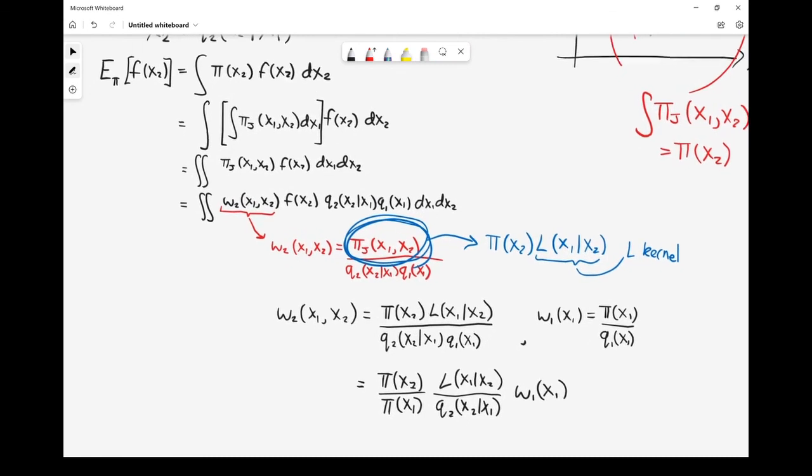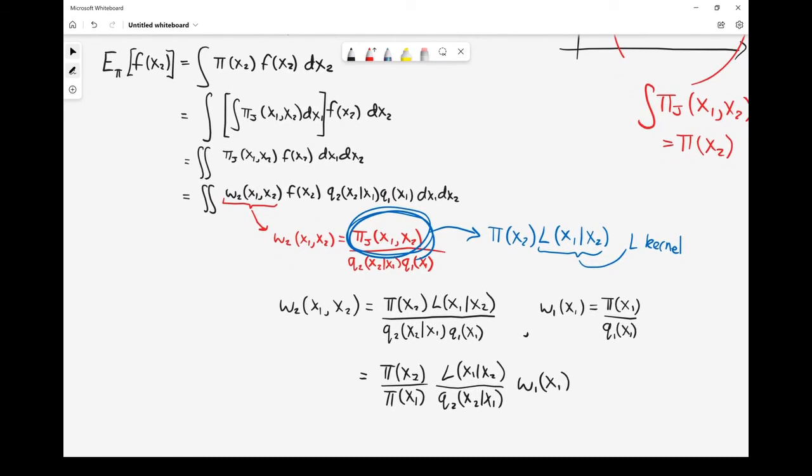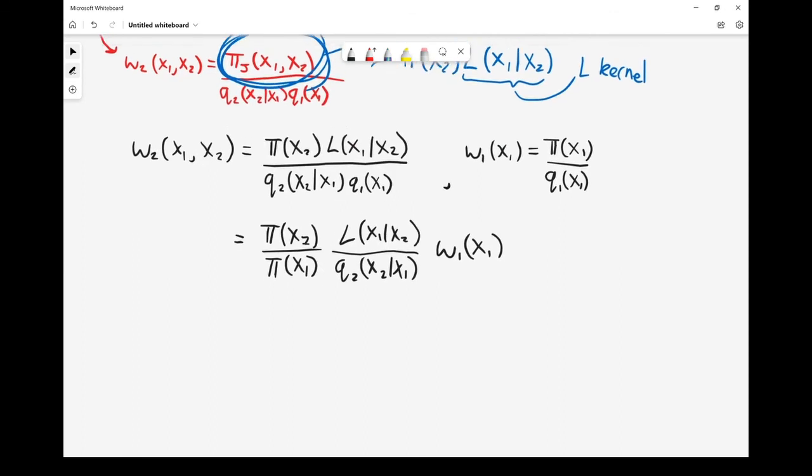The take home message from this video is we've entered the second iteration. We want our samples x2 to explore the space a bit more. To do that, we're proposing them conditional on x1. We're still interested in this expected value of some function with respect to the target. We go through a bit of maths and we say, actually, we've got some freedom in choosing this joint distribution, so long as it marginalizes to give the target, which is what we've written over here. We've chosen it to be the target multiplied by this L kernel, where the L kernel is completely up to us to choose.